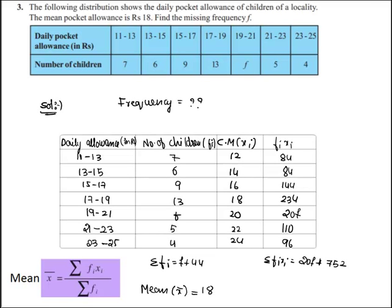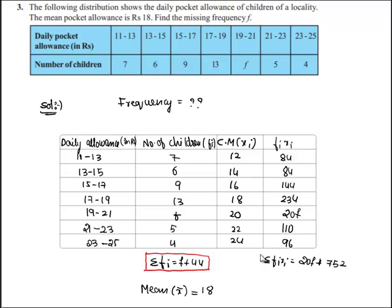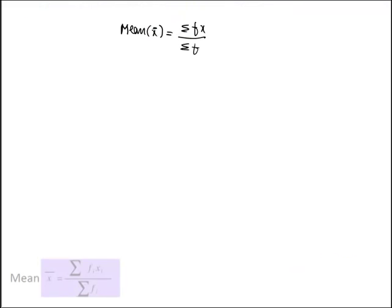We know the values: sigma fi is f plus 44 and sigma fi xi is 20f plus 752. We shall substitute these values in the formula to get the missing frequency. That is, x bar 18 equals sigma fx, which is 20f plus 752, by sigma f, which is f plus 44.